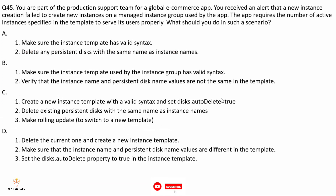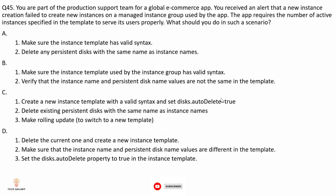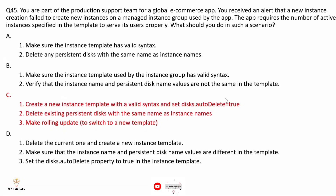Question 45: You are part of the production support team for a global e-commerce app. You received an alert that new instance creation failed on a managed instance group used by the app. The app requires the number of active instances specified in the template. What should you do? The correct answer is option C.